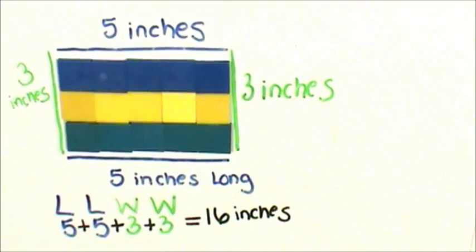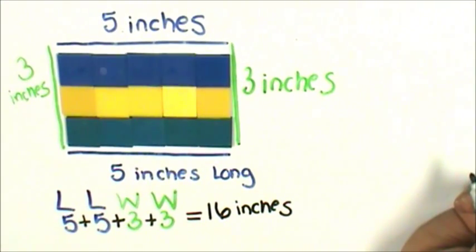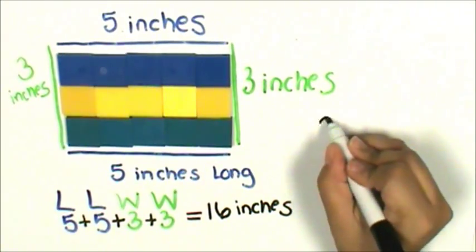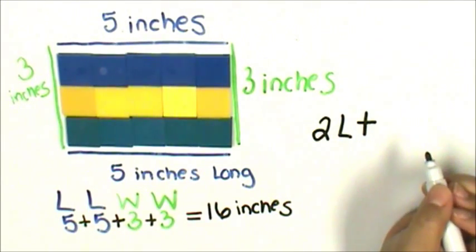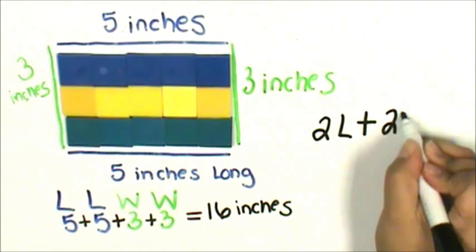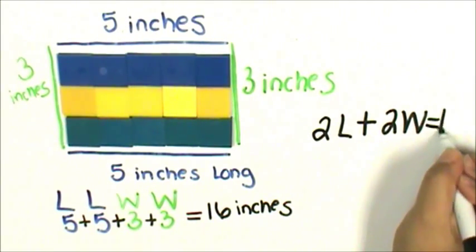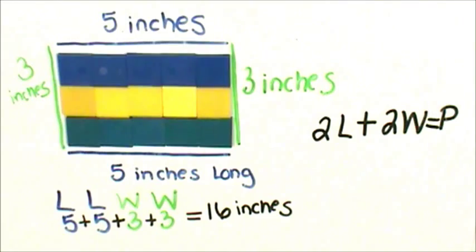I can also say, I traced 2 lengths and I traced 2 widths and I joined them to add the perimeter.